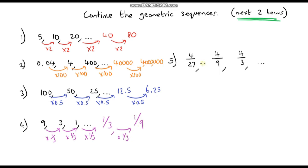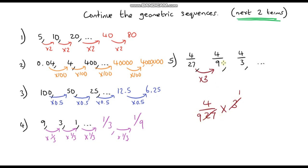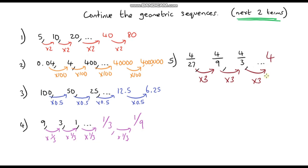To go from 4/27 to 4/9, the denominator is getting 3 times as small, so the value is getting 3 times as big — I'm multiplying by 3. Checking: 4/27 times 3 simplifies to 4/9, which confirms the answer. So multiplying by 3: 4/9 times 3 gives 4/3, and then 4/3 times 3 gives 4, and 4 times 3 gives 12.